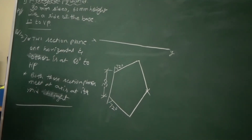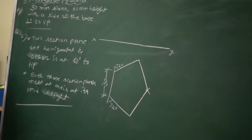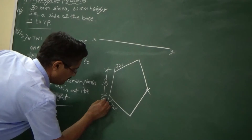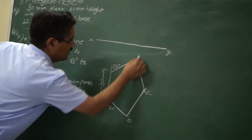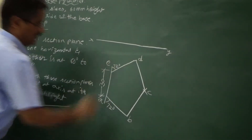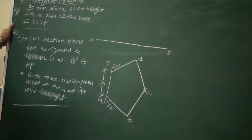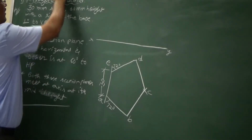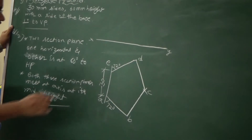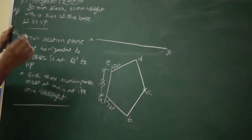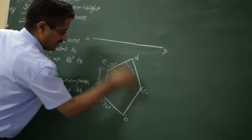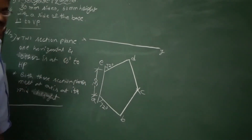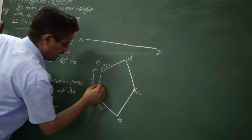As it is a pyramid, name the vertices A, B, C, D, and E. We give only one set of letters because a pyramid has only a base — the top is an apex point, not a face. So one set of letters is sufficient. Next, find the center by bisecting one side and drawing a line to the opposite corner; their intersection gives you point O.